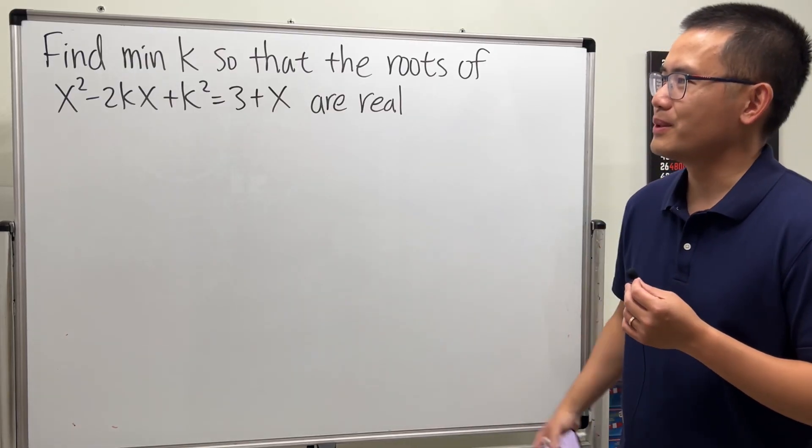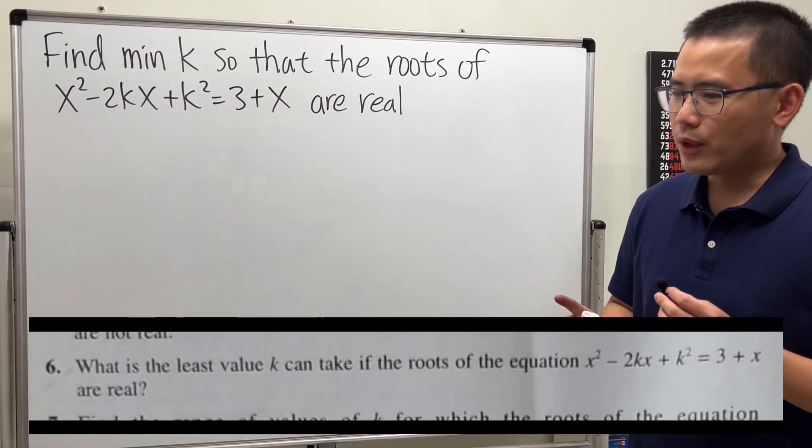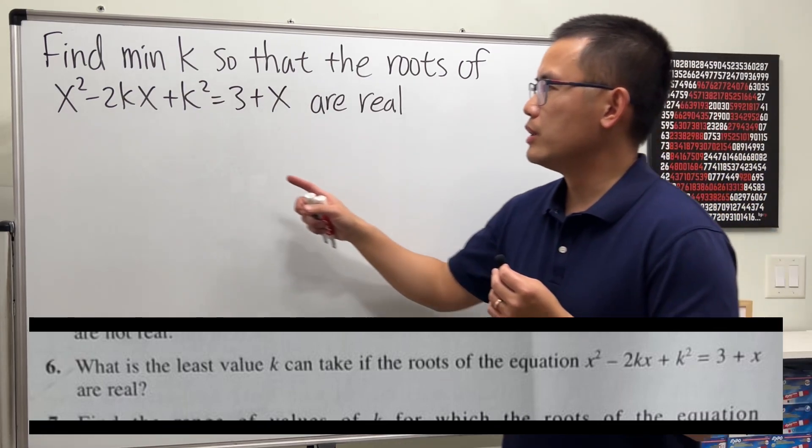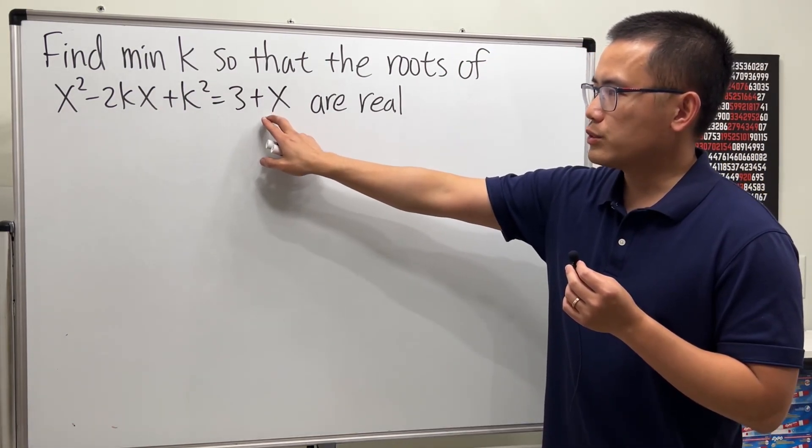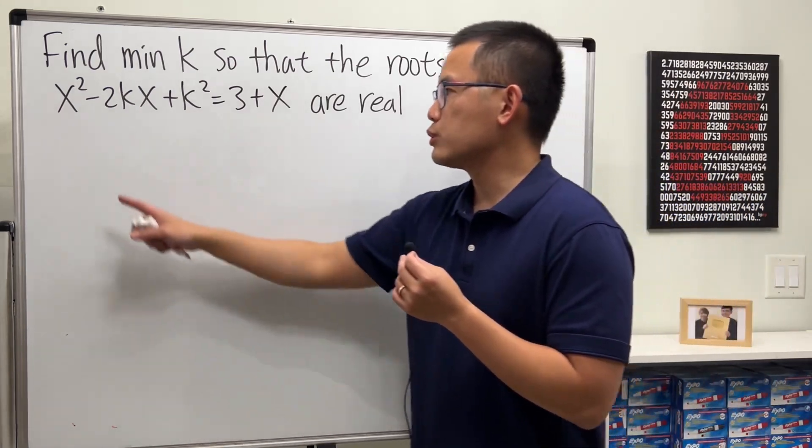Let's take a look. We are going to find the least value of k so that the roots to this equation are real. Notice this right here is a quadratic equation because we have x squared.